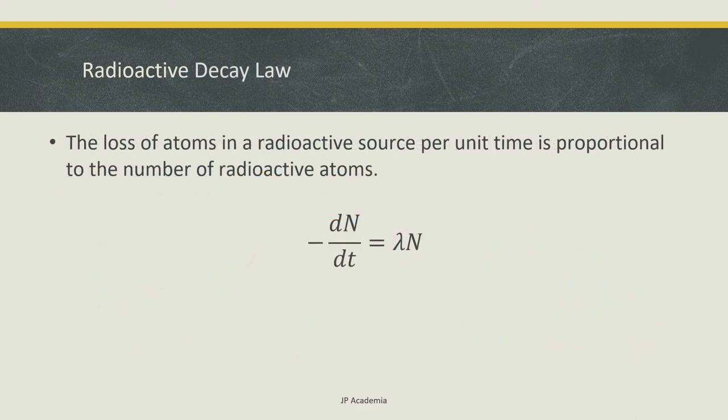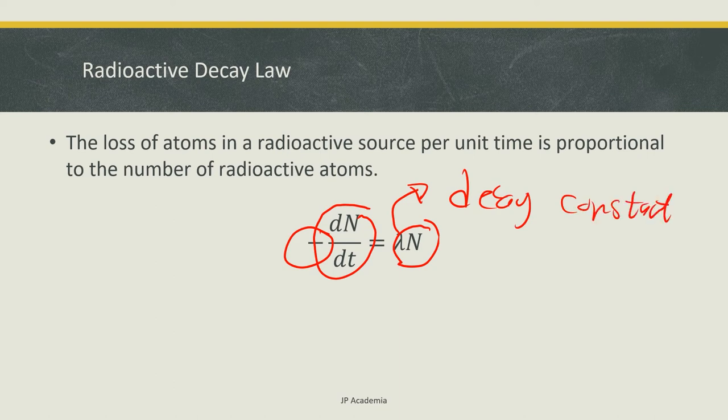Radioactive decay law states that the loss of atoms in a radioactive source per unit time, which refers to this first derivative here, negative because this is a loss, is proportional to the number of radioactive atoms N with the constant of proportionality lambda. This lambda is called the decay constant.